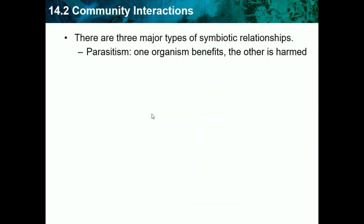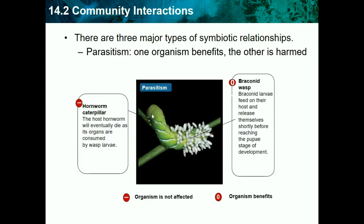Parasitism is when one organism benefits but the other is harmed. For example, a braconid wasp and a caterpillar: the host hornworm eventually dies as its organs are consumed by wasp larvae, which feed on the host and release themselves only shortly before reaching the pupa stage. Another example is a tapeworm, which lives inside a host body and absorbs all its nutrients.